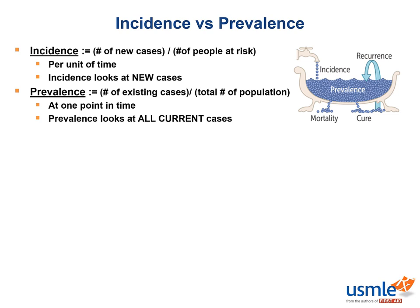From this example, we can see that incidence adds to the existing prevalence. From this diagram, we can also see that both mortality and cures are represented as leaks in the tub, as they will decrease the prevalence, since a person who has been cured of a disease or has died from said disease is no longer a member of the at-risk population.